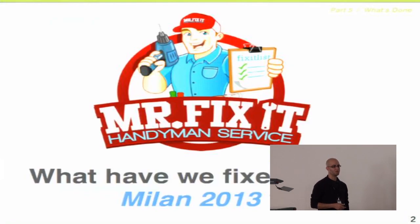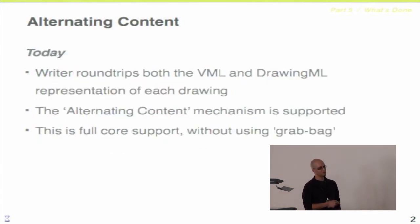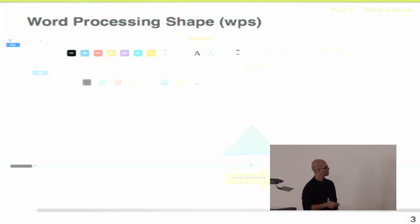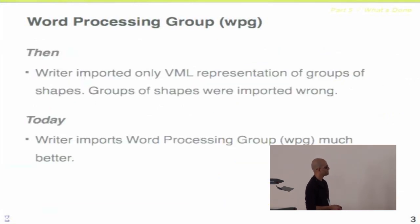Work has been done on word processing groups — grouping of shapes. Here's the original file and what round-tripped LibreOffice produced a year ago: a lot of the grouping was messed up and colors changed. This is how it round-trips today — exactly the same, one-to-one. Another example: original file and round-tripped one look exactly the same. And a third example where the document title was behind other shapes, fields were lost at the bottom, lines from top to bottom were lost, and images cropped differently — today it's almost one-to-one.